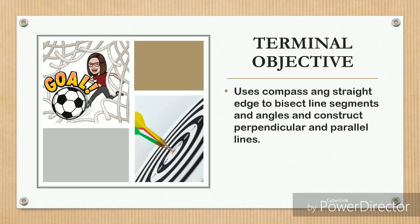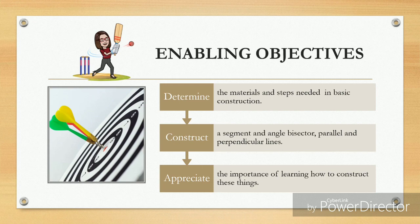Our terminal objective is to use a compass and straight edge to bisect line segments and angles and construct perpendicular and parallel lines. Particularly, we will determine the materials and steps needed in basic construction. We will construct a segment and angle bisector, parallel and perpendicular lines. And finally, you will appreciate the importance of learning how to construct these things.